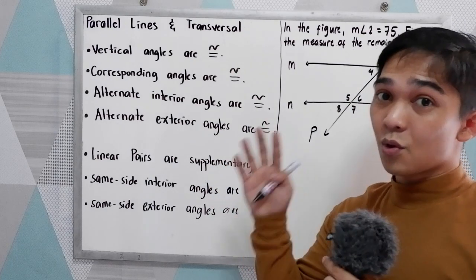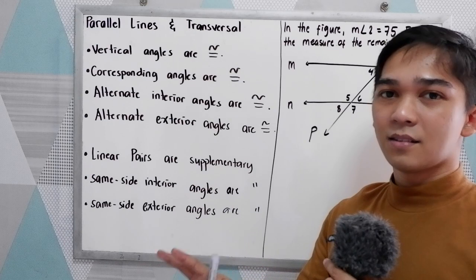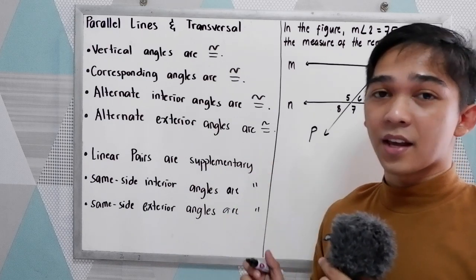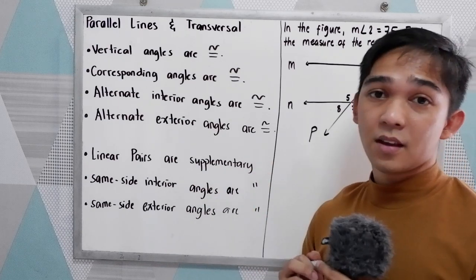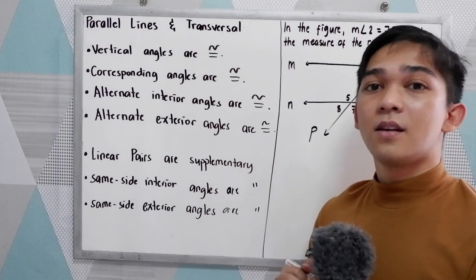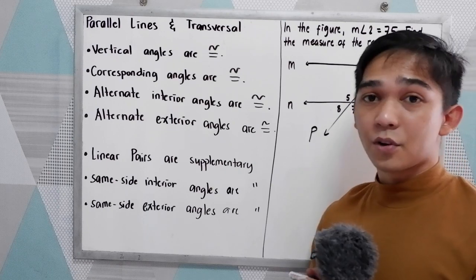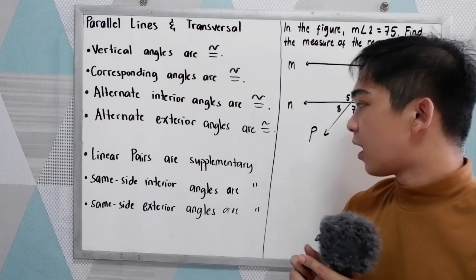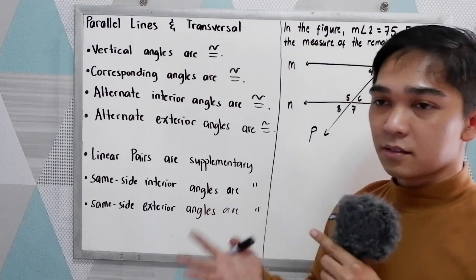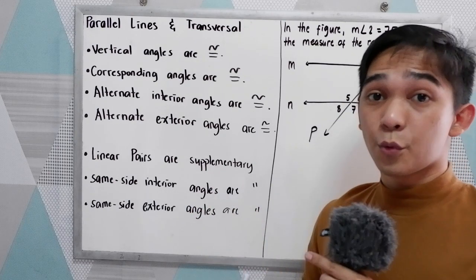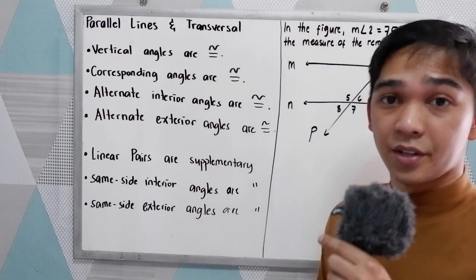When you say supplementary, the sum of their measures is equal to 180 degrees. So if you're going to add the two pairs of angles, the sum is equal to 180 degrees.